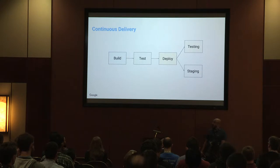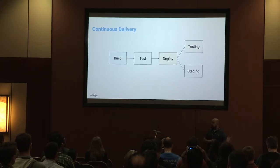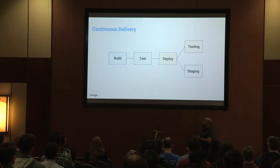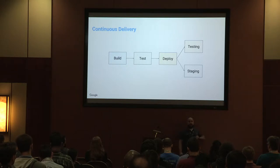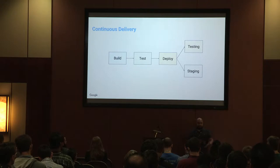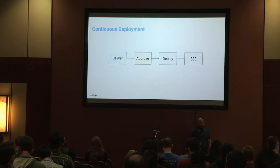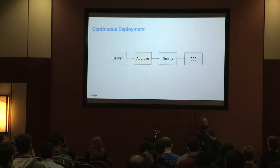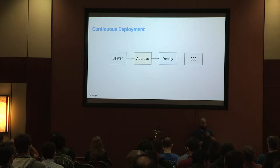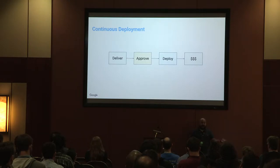With delivery, it looks about the same. You get to that continuous build or integration step, testing, deploying, and then you do deployment out to testing or staging environments to review changes and make sure things look good before rolling something out into production. You deliver, approve those changes, deploy them to production, and then the dollars start rolling in.